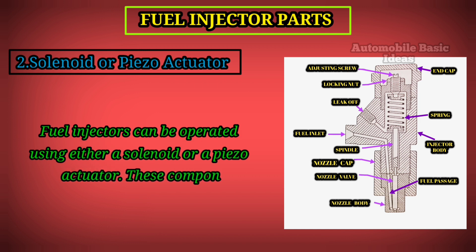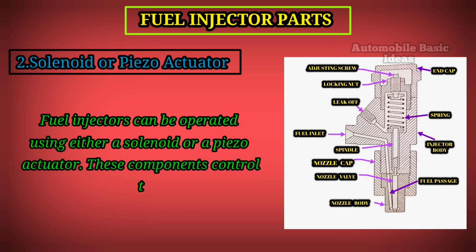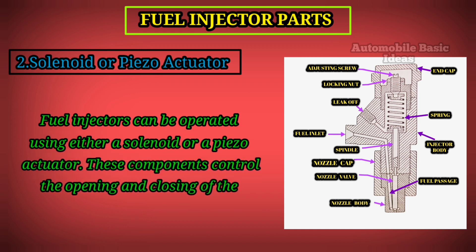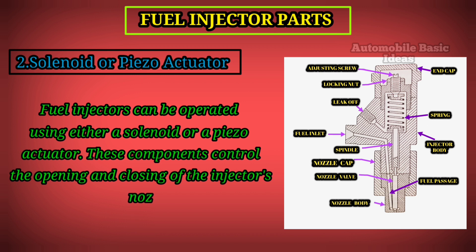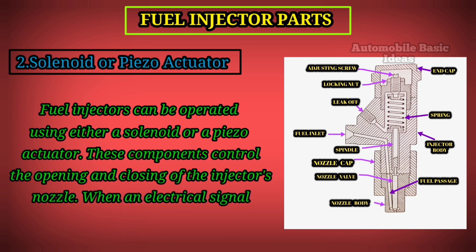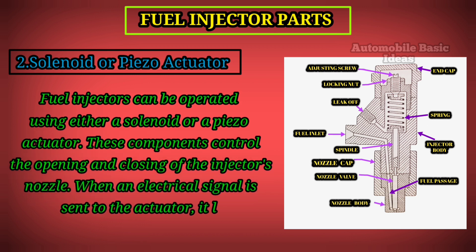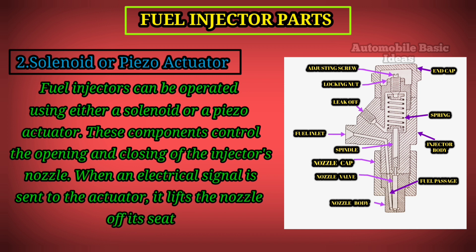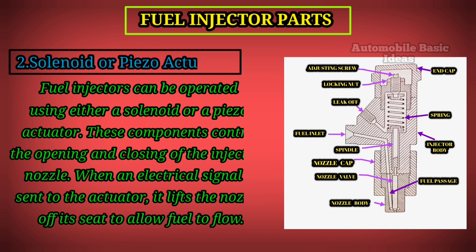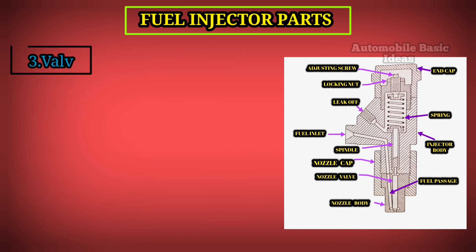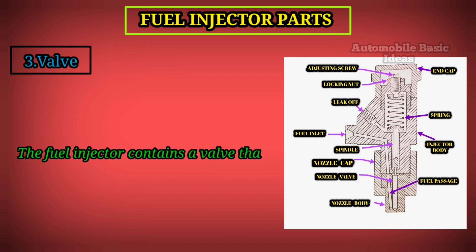2. Solenoid or Piezo Actuator. Fuel injectors can be operated using either a solenoid or a piezo actuator. These components control the opening and closing of the injector's nozzle. When an electrical signal is sent to the actuator, it lifts the nozzle off its seat to allow fuel to flow.